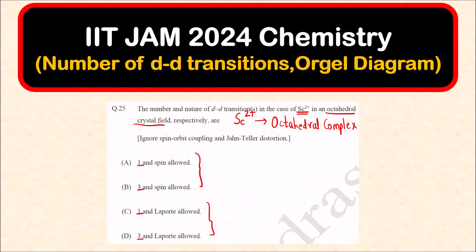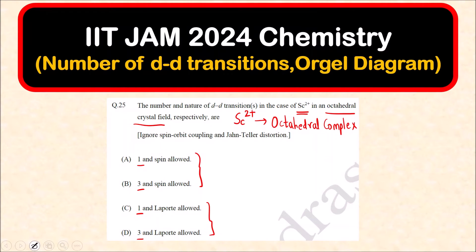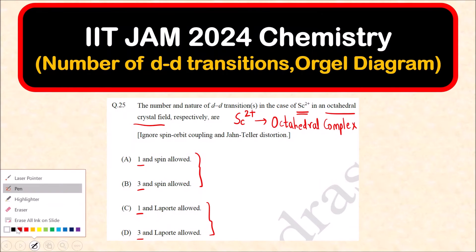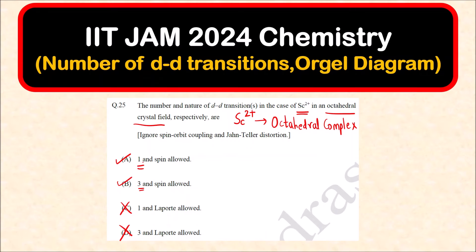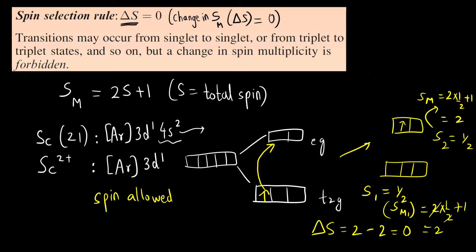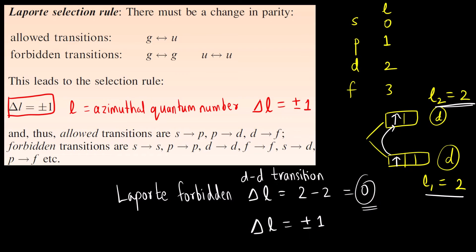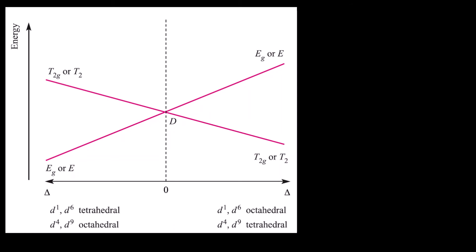Looking at the options, we can eliminate two of them. The transition is spin allowed — correct — but Laporte forbidden, not Laporte allowed. So options C and D are incorrect. Now we need to find out the total number of d-d transitions possible. For that, we calculate the Orgel diagram, which requires finding the ground state term for the d¹ system. Sc²⁺ is a d¹ system — 3d¹.